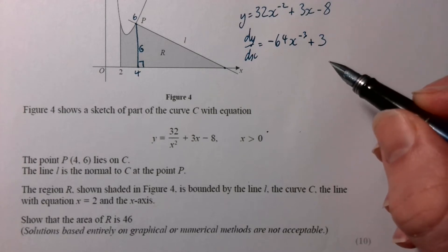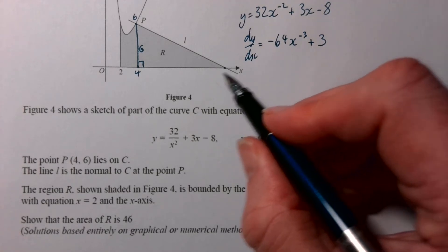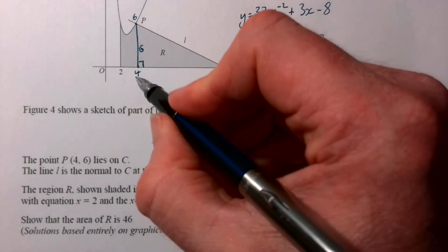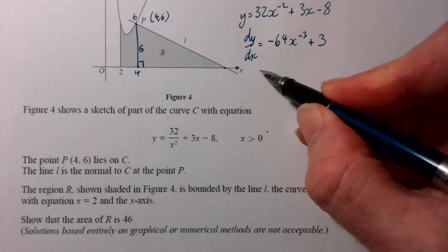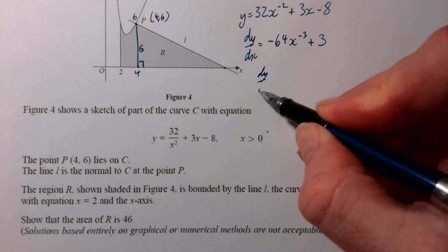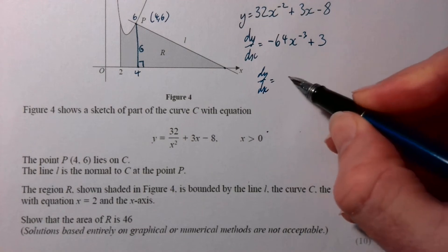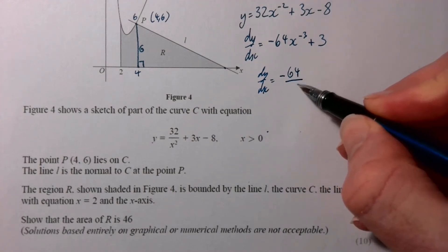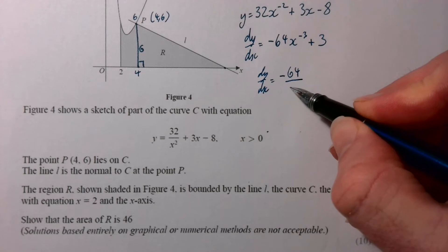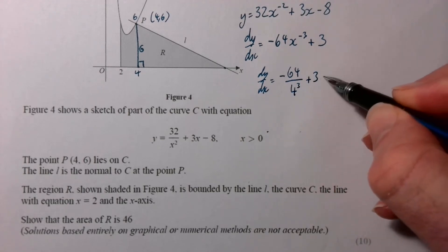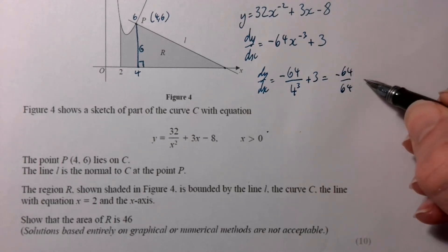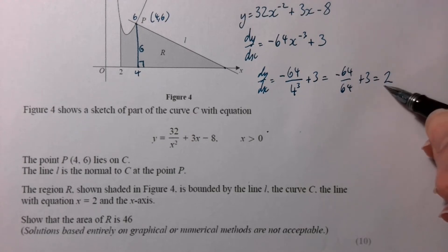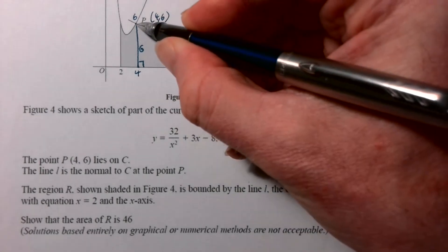What we now need to do is find out what the gradient is when x is 4, because that point there is the point 4, 6. So when x is 4, dy/dx is going to be minus 64 over x cubed, so that's 4 cubed plus 3. Well, 4 cubed is 64, so negative 64 over 64 is negative 1 plus 3, which is 2. So the gradient of the curve is 2.